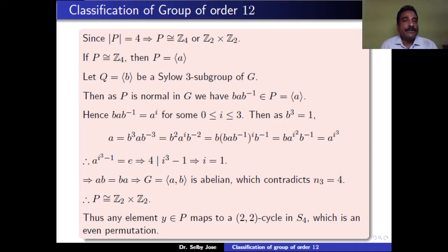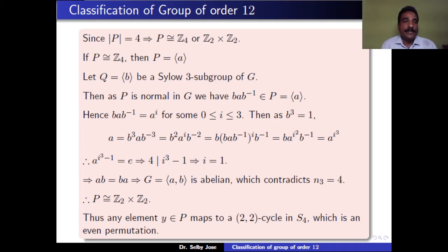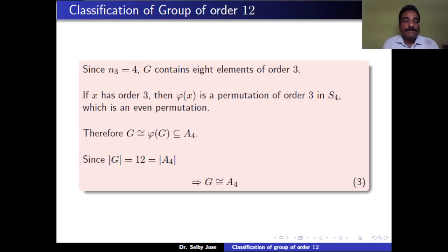Therefore P is isomorphic to Z2 × Z2. Every element of P has order 2 (except the identity), so each element y ∈ P maps to a 2-2 cycle in S4, which is an even permutation, and therefore belongs to A4.